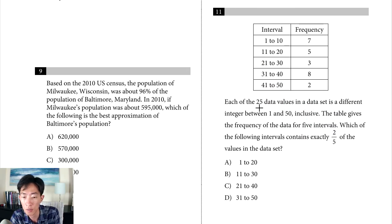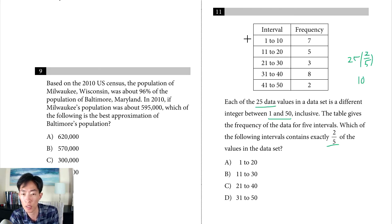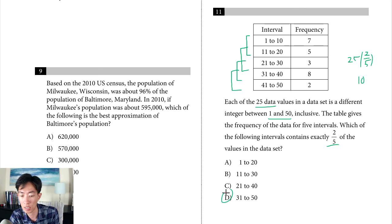Question 11: 25 data values are integers between 1 and 50. A table gives frequencies for five intervals. We need the interval containing exactly two-fifths of 25 values. Two-fifths of 25 is 10. Checking the intervals: 1–20 gives 7 plus 5 equals 12; 11–30 gives 5 plus 3 equals 8; 21–40 gives 3 plus 8 equals 11; and 31–50 gives 10, which is the answer.